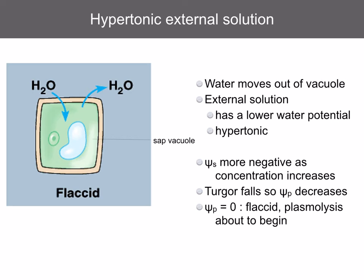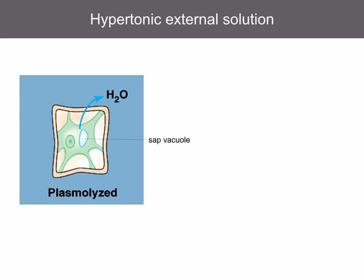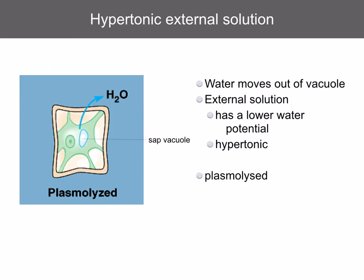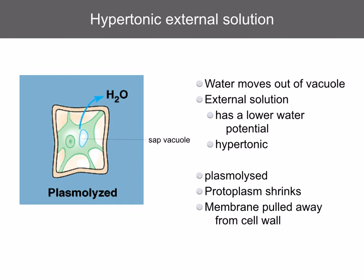If you remember the equation for water potential: water potential equals solute potential plus pressure potential. If the pressure potential is zero, the water potential equals the solute potential — this is what we call incipient plasmolysis. As water continues to move out of the vacuole and out of the cell, the protoplasm shrinks and the membrane is pulled away from the cell wall. In severe cases, the plasmodesmata are damaged and the cell is destroyed.